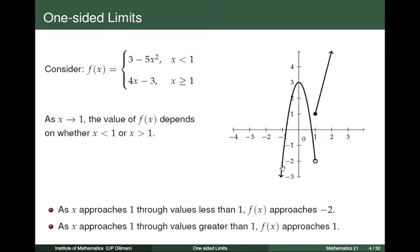This is the parabola 3 minus 5x squared, and this is the line 4x minus 3. Now let us consider the point x equals 1. As x tends to 1, the value of f(x) depends on whether x is less than 1 or greater than 1. When x is less than 1, the function is given by the parabola, but when x is greater than 1, it is given by the line. Observe that as x approaches 1 through values less than 1, f(x) approaches negative 2.